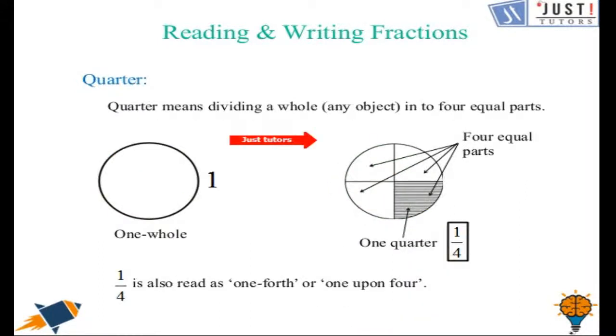Now it's time to learn quarter. As in half we divide the shape into 2 equal parts, in quarters we divide the shape or any object into 4 equal parts. So suppose that it's a pizza, a whole pizza and we have made 4 equal slices out of it. So 1 piece will be 1 quarter which means 1 out of 4 parts. We read it as 1 quarter, 1 fourth, or 1 upon 4.